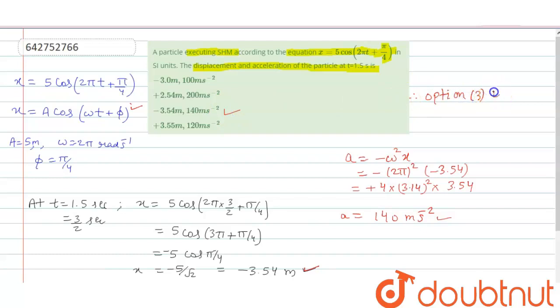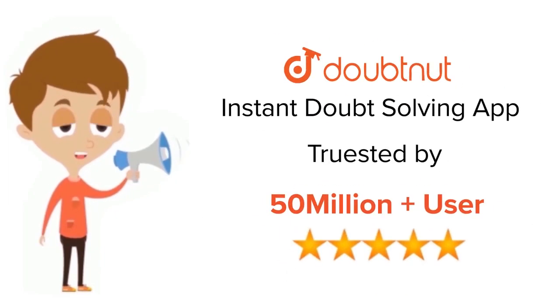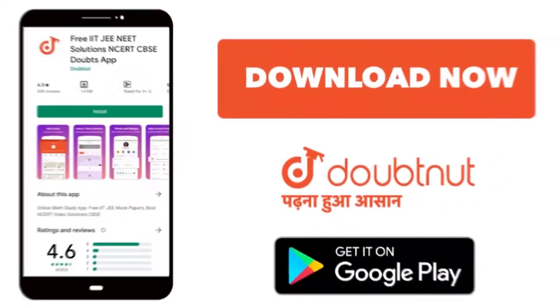Option number 3 is correct. For class 6 to 12, IIT-JEE and NEET level. Trusted by more than 5 crore students. Download Doubtnut app today.